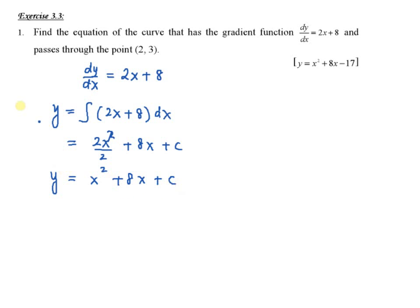Now, how to find the value of c? You are given the point (2, 3), so you can substitute x = 2 and y = 3 into the equation. So here, 3 = 2² + 8(2) + c, which gives you c = -17.